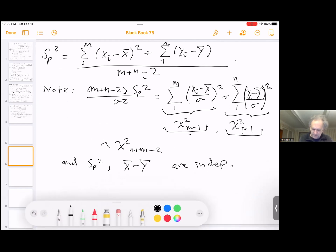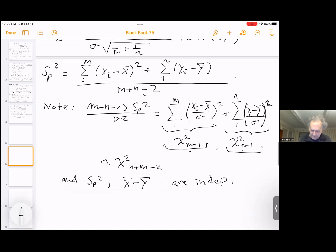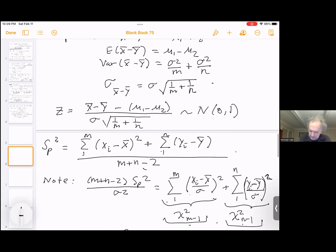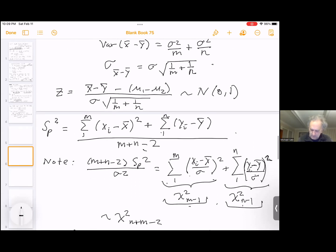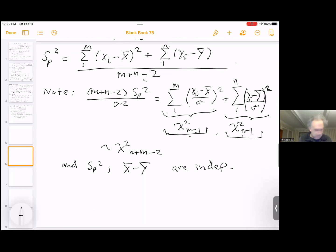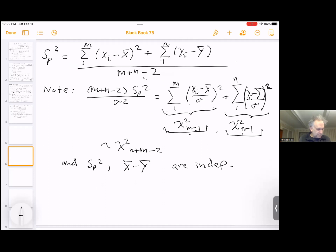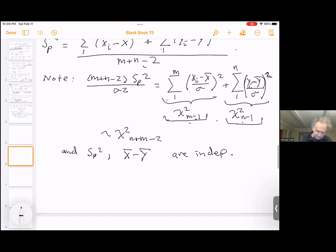That might be not as clear, but you'll have to accept this for now, and maybe we could talk more about this. But again, it just comes from all the samples being independent of each other, and the result from theorem 7.3. So we have our t random variable then.